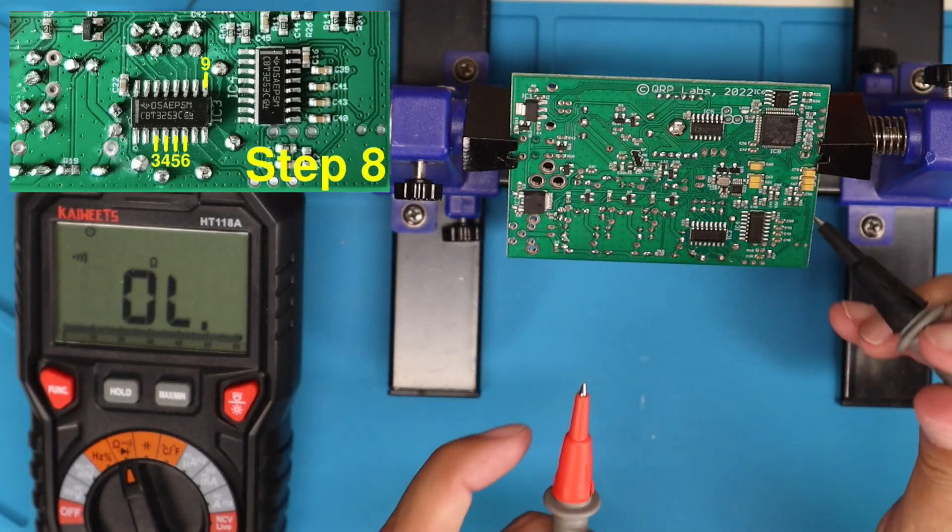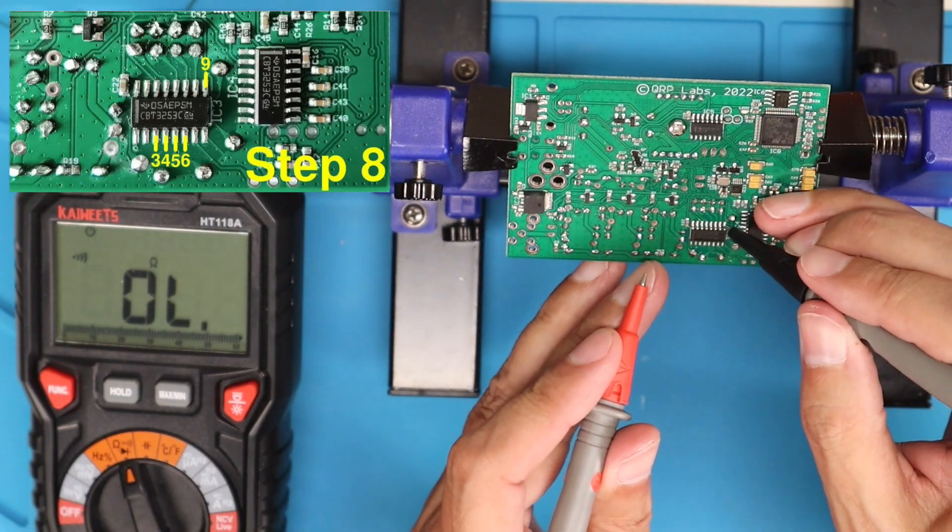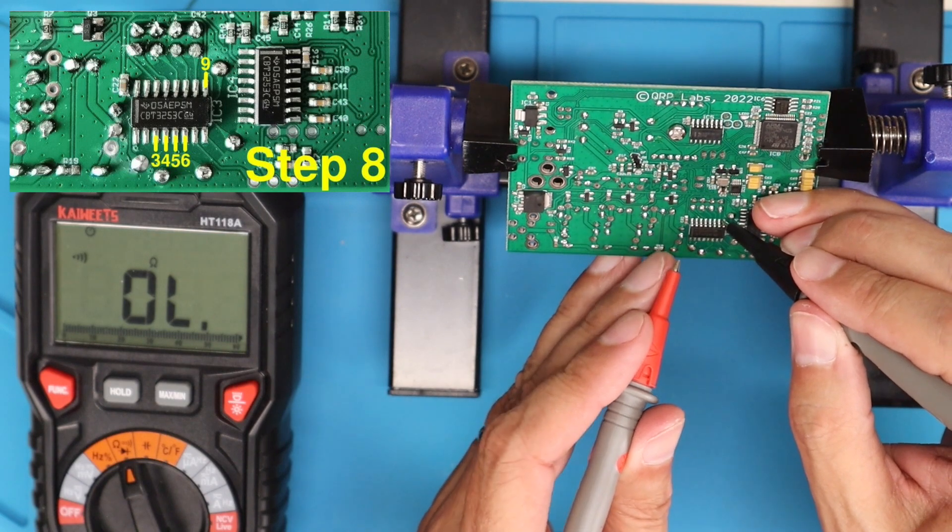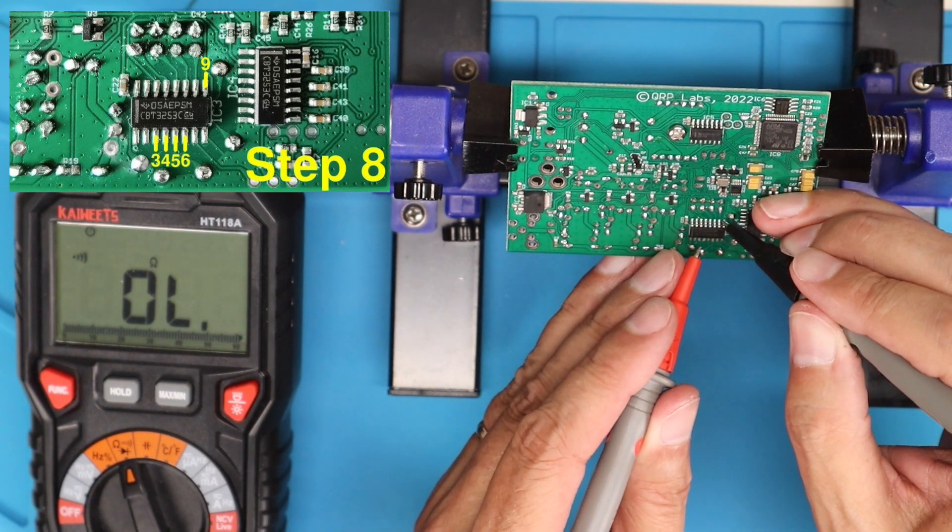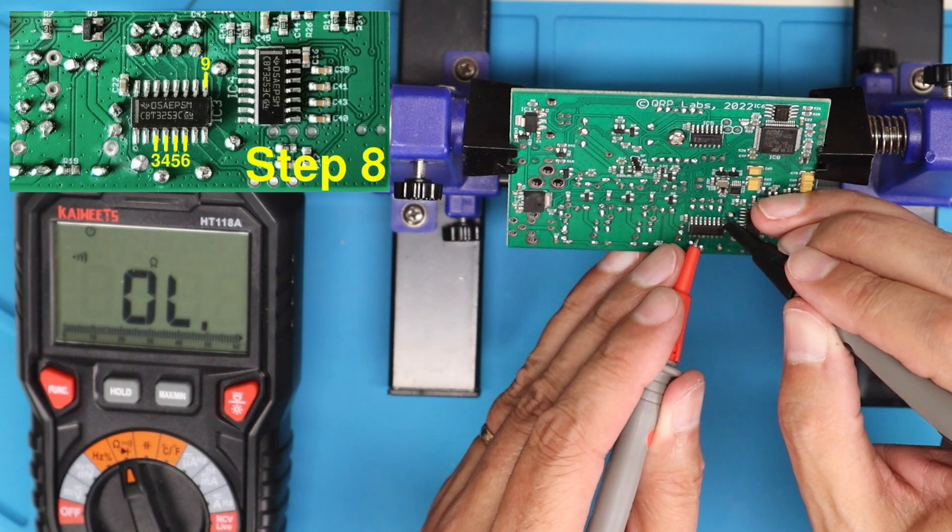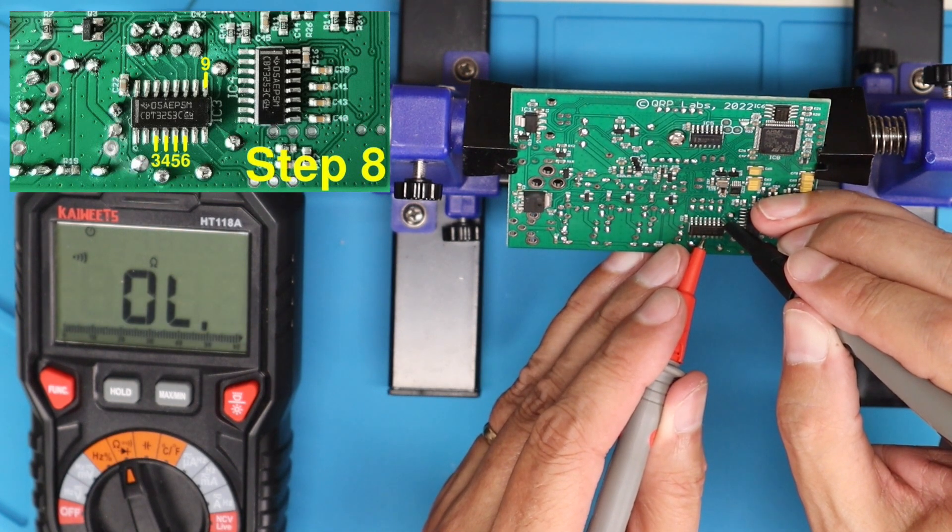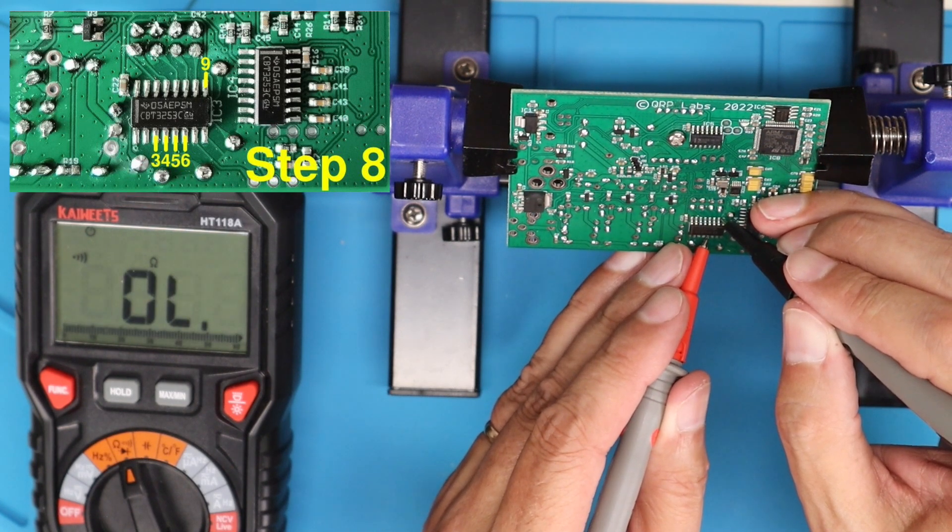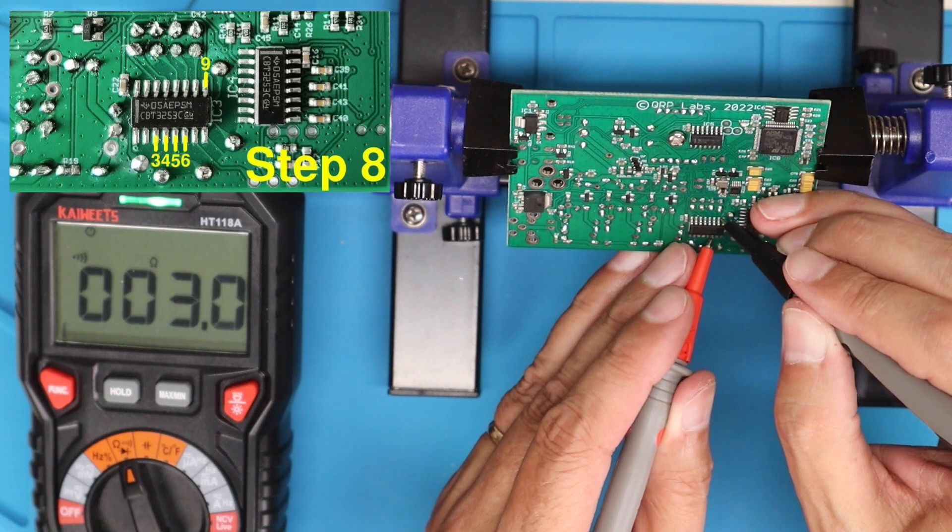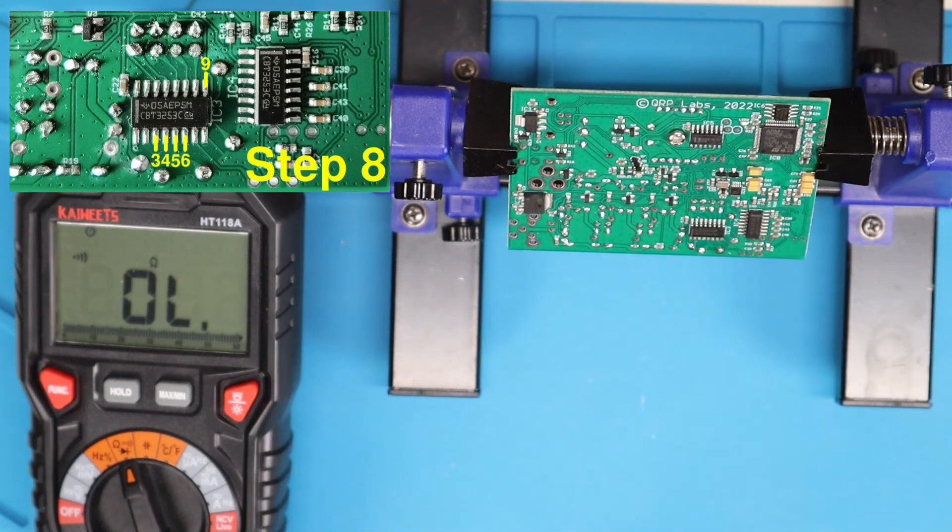And to finish this off we're going to check for continuity between pins 9 and 3, 4, 5, and 6. They should all be connected together if you did this correctly. So you can hold the one lead on pin 9 and then go through the others and make sure you've got good continuity.